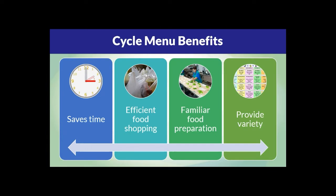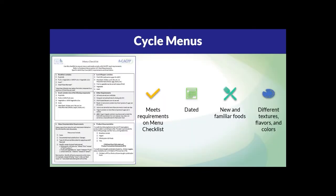Cycle menus also help make food preparation more efficient because you are repeating the same recipes in meal production on a regular basis, so they become familiar to you. Cycle menus also help provide variety, as they often do not repeat the same foods and or meals. A cycle menu that qualifies will meet all the requirements on the menu checklist. When using cycle menus labeled week one, week two, and so on, you must print each week and date it with the month and dates, as it is required to keep dated menus on file. It is best practice to include a mixture of new and familiar foods and different textures, flavors, and colors at each meal — for example, when serving chicken alfredo, serve it with red strawberries and a green salad instead of diced pears and mashed potatoes, which are the same color and texture.